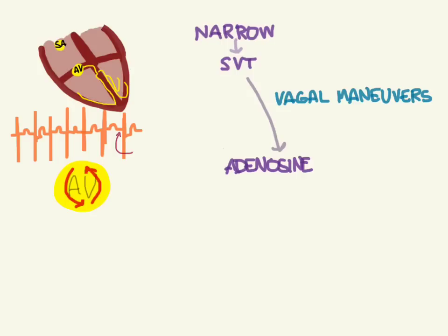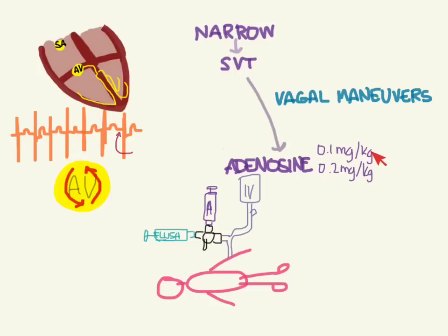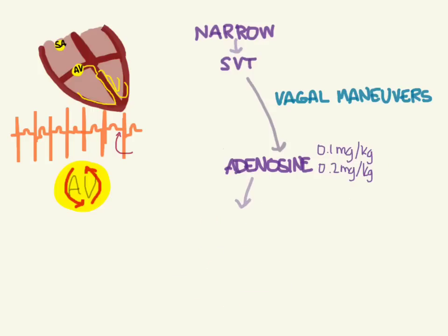The first medication to try is adenosine. It's a very fast-acting drug that also breaks down quickly, so you have to push it in super fast. Push it into the IV connection closest to the patient — not the one further away. Use a three-way stopcock so you can flush with one hand on the adenosine and one hand on the flush, pumping it in quickly and then flushing it through. The first dose is 0.1 mg/kg and the second dose is 0.2 mg/kg.